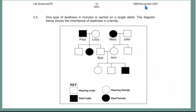Next, I will interpret a question from the November 2021 question paper. The question reads: one type of deafness in humans is carried on a single allele. The diagram shows the inheritance of deafness in a family across three generations. The key shows: unshaded square is a hearing male, shaded square is a deaf male, unshaded circle is a hearing female, and shaded circle is a deaf female.